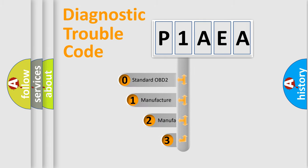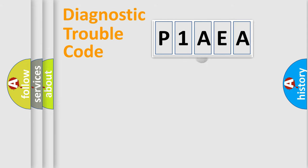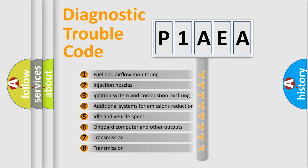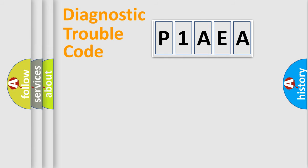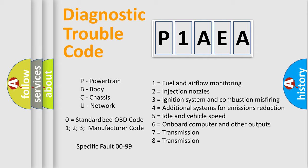If the second character is expressed as zero, it is a standardized error. In the case of numbers 1, 2, 3, it is a manufacturer-specific error. The third character specifies a subset of errors. The distribution shown is valid only for the standardized DTC code. Only the last two characters define the specific fault of the group. Let's not forget that such a division is valid only if the second character code is expressed by the number zero.